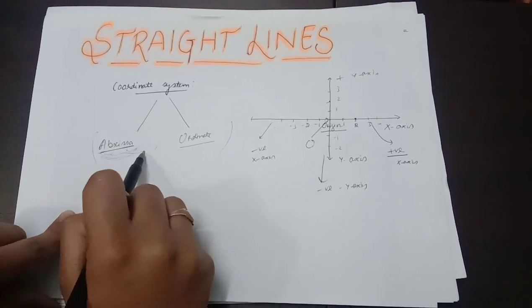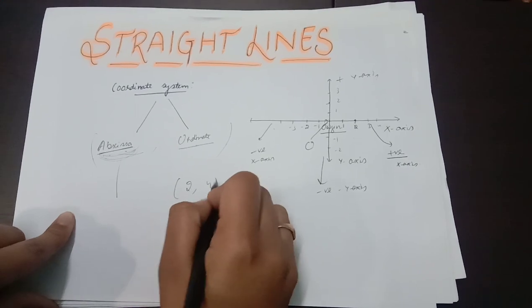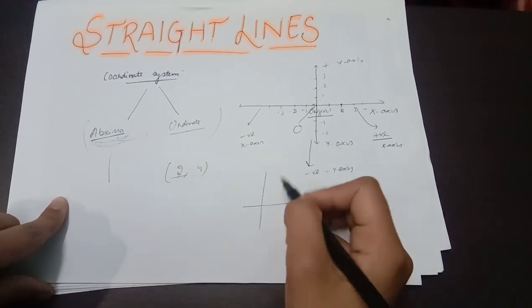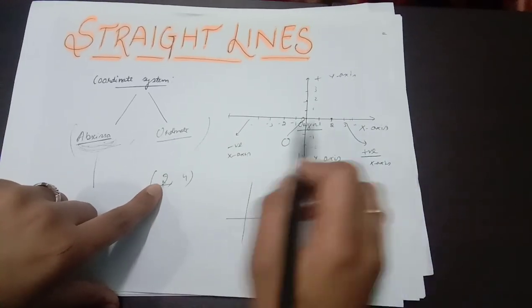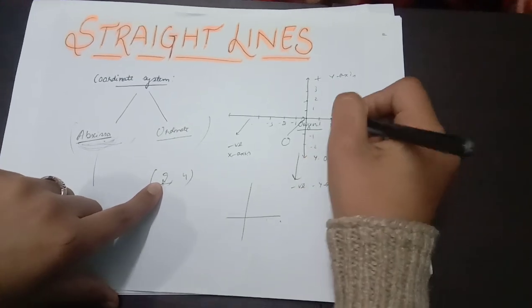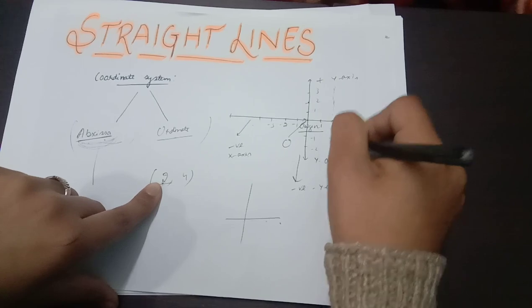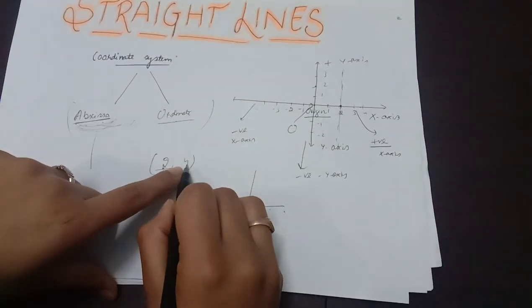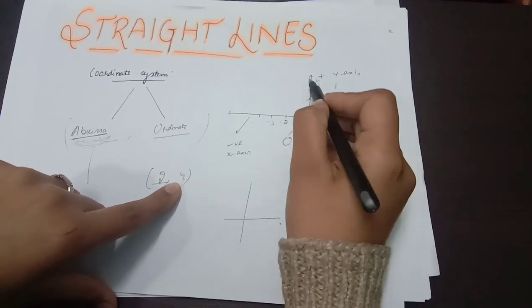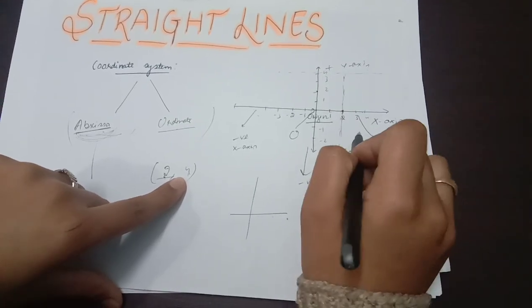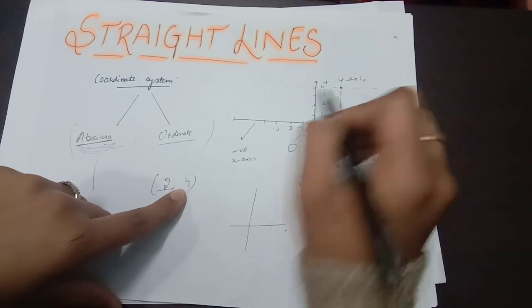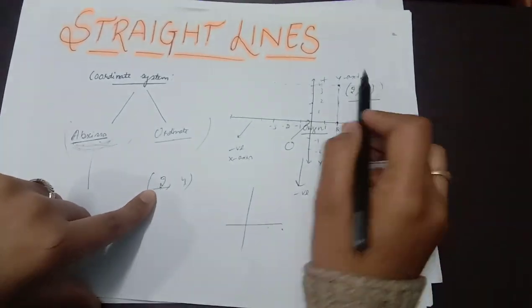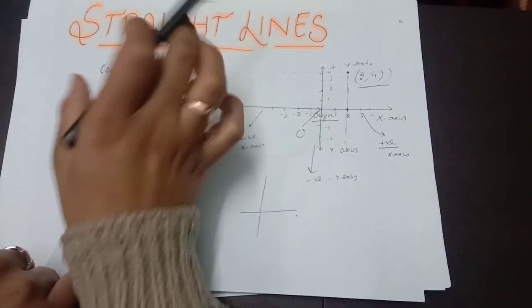In the coordinate system, we have an x-value and a y-value. For example, take the point (2, 4): the point is 2 units towards the positive x-axis and 4 units towards the positive y-axis. From positive 2 on the x-axis, we draw a perpendicular line parallel to the y-axis. From positive 4 on the y-axis, we draw a line parallel to the x-axis and perpendicular to the y-axis. Their intersection point is our coordinate (2, 4) — this is how we plot a point using abscissa and ordinate.